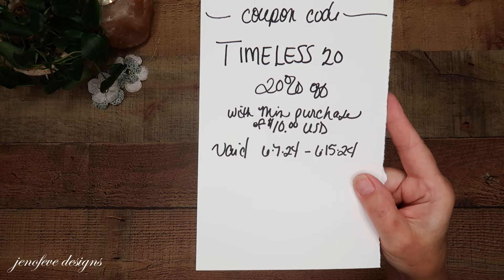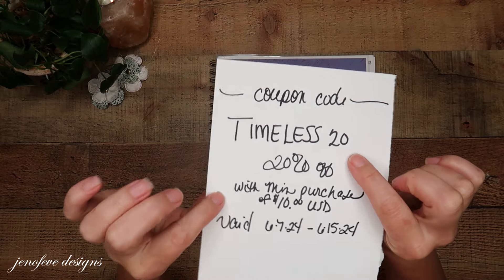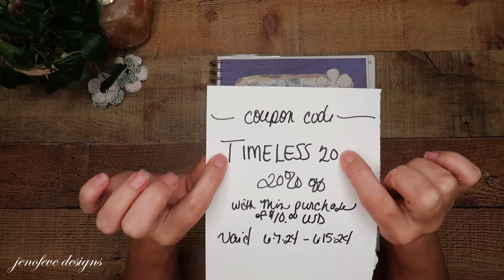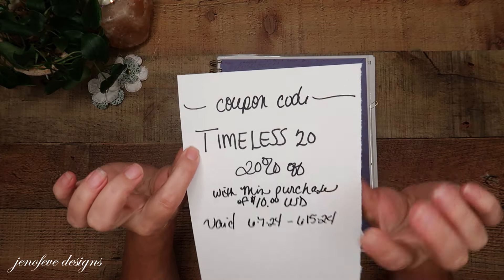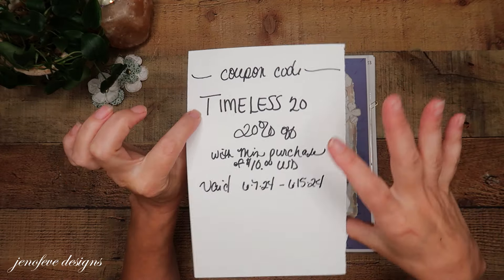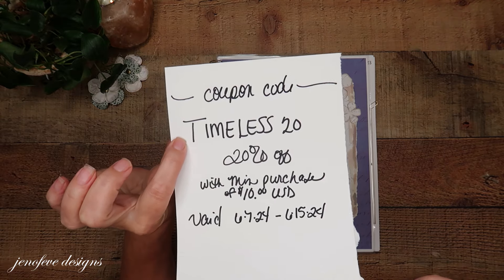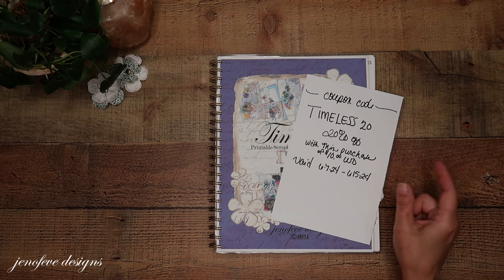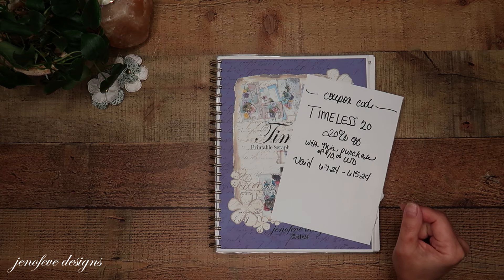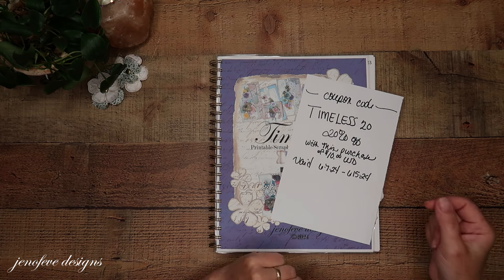The coupon code is good for everything in my Etsy shop. Just enter it at checkout, make sure you have a minimum purchase of $10, and you can use it as many times as you want throughout this week. I will have my Etsy shop linked down below as well. Thanks for joining me today, you guys — I'll see you in the next one. Bye!